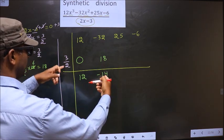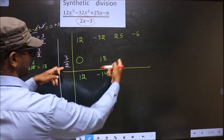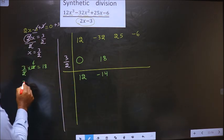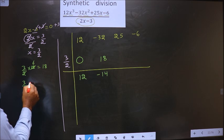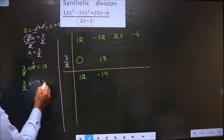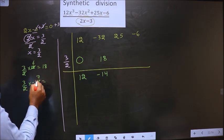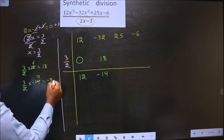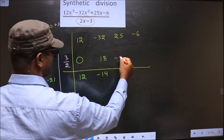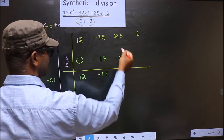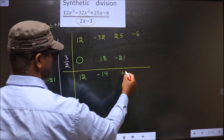Now we should multiply these 2 and write here. So that is 3 by 2 into minus 14. We get minus 21. Now add these 2. We get plus 4.